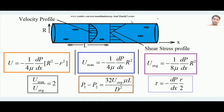The shear stress at radial distance r from the center is: τ = −(dp/dx)(r/2). At the inner peripheral surface (r = R), shear stress is maximum. At the centerline (r = 0), shear stress is zero. The negative sign compensates for the negative dp/dx, keeping shear stress positive.